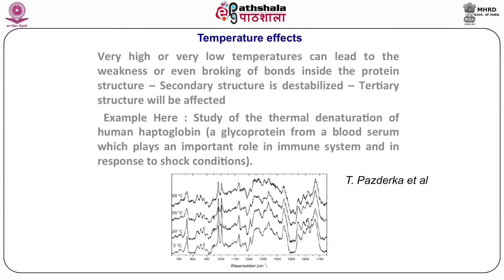The effect of temperature: very high or very low temperature can lead to weakening or even breaking of bonds inside the protein structure, destabilizing secondary structure and affecting tertiary structure. An example study of thermal denaturation of human haptoglobin — a glycoprotein from blood serum playing an important role in the immune system and response to heat shock — showed the amide-1 and amide-3 band positions at different temperatures. Dramatic changes in amide frequencies were observed, reflecting actual structural changes at both secondary and tertiary levels.